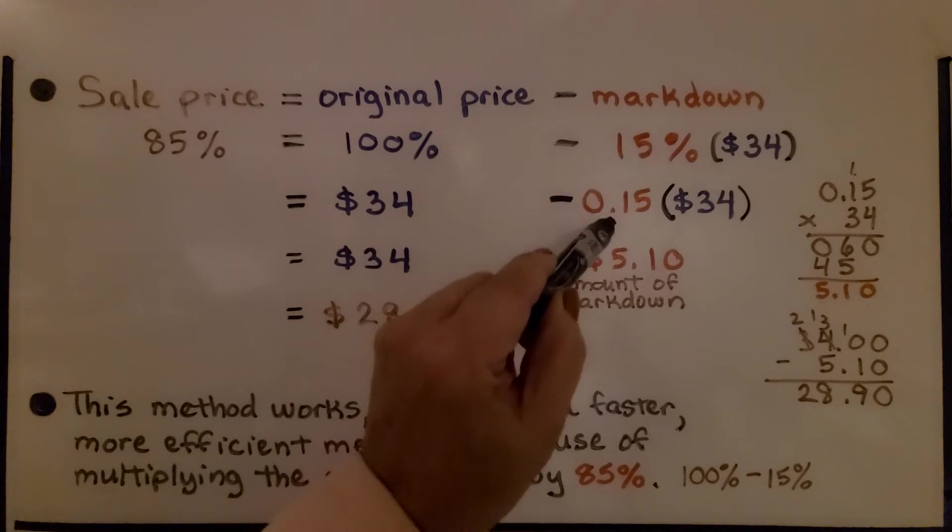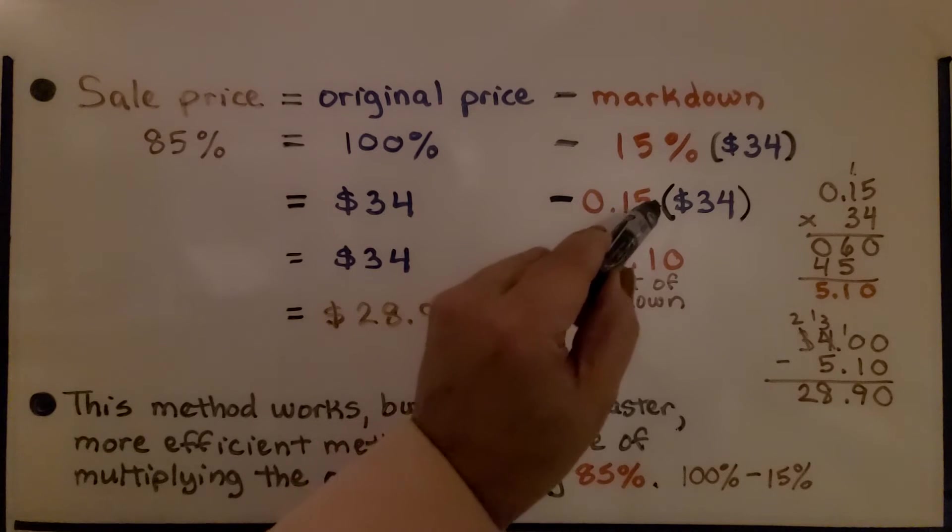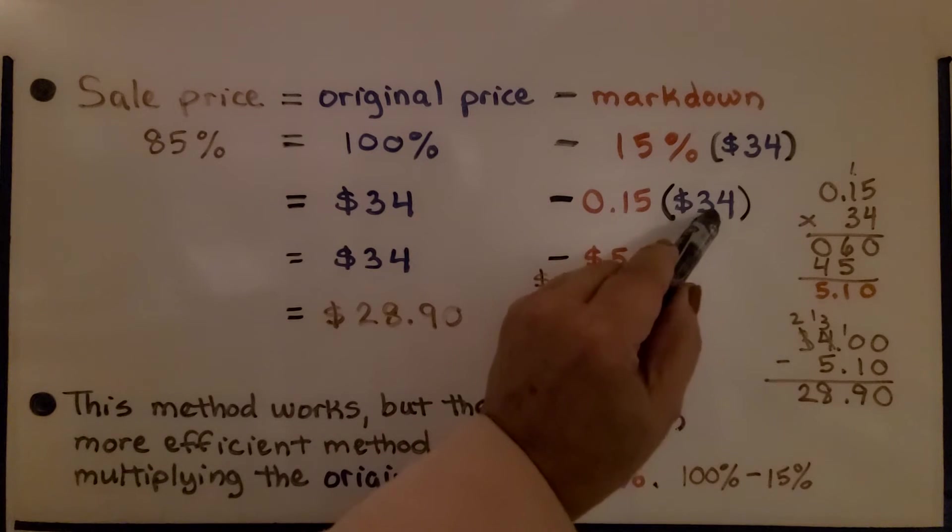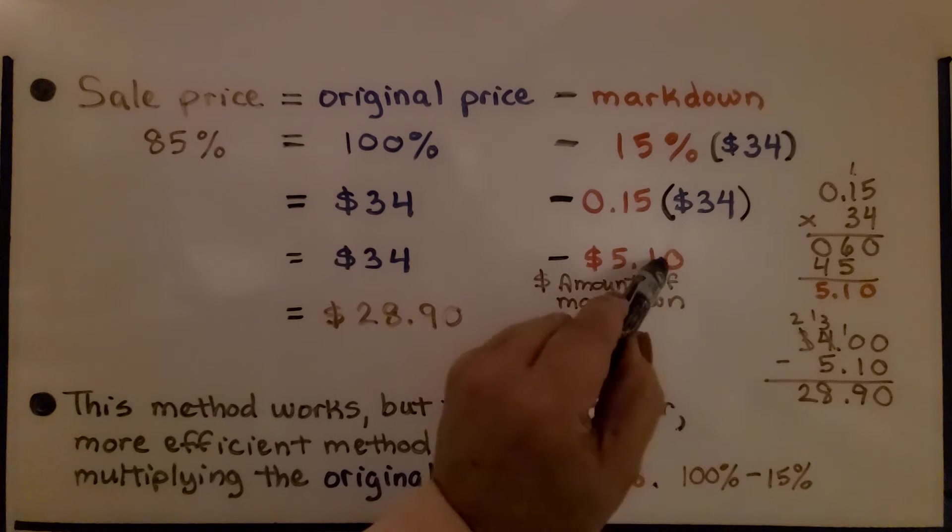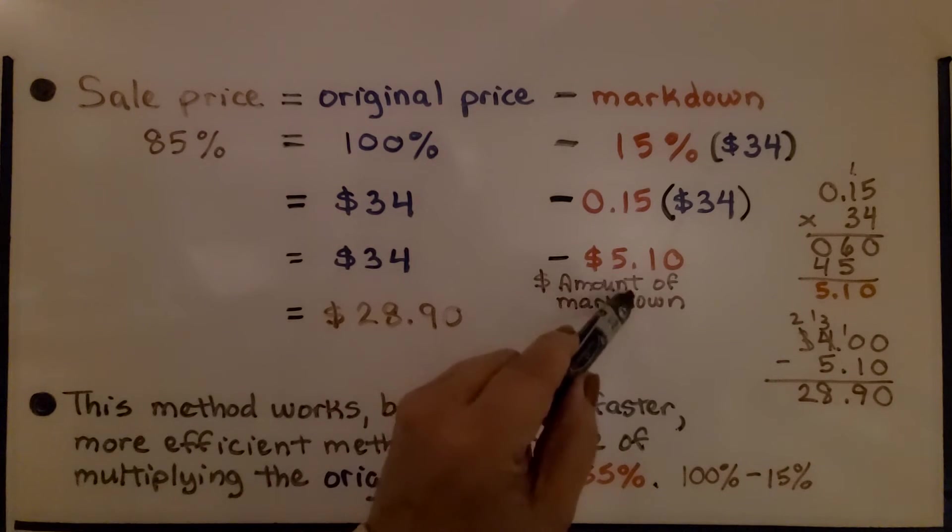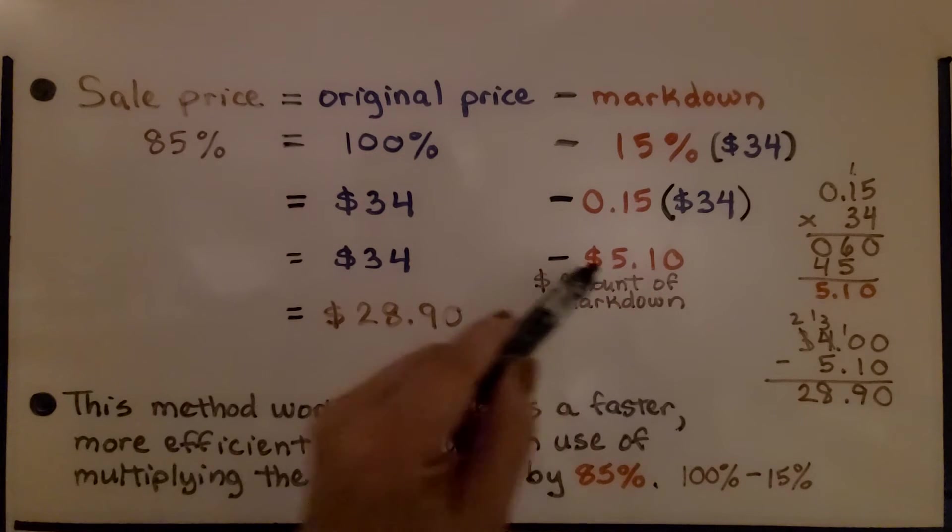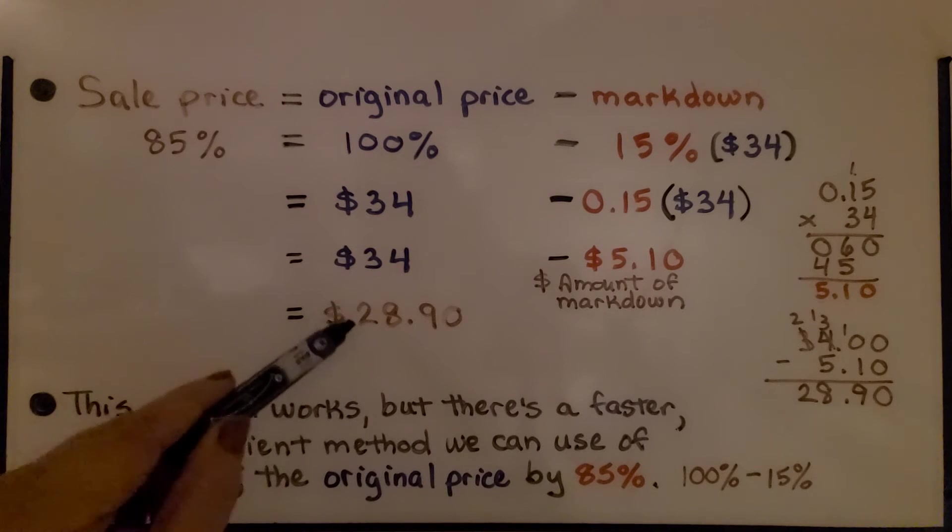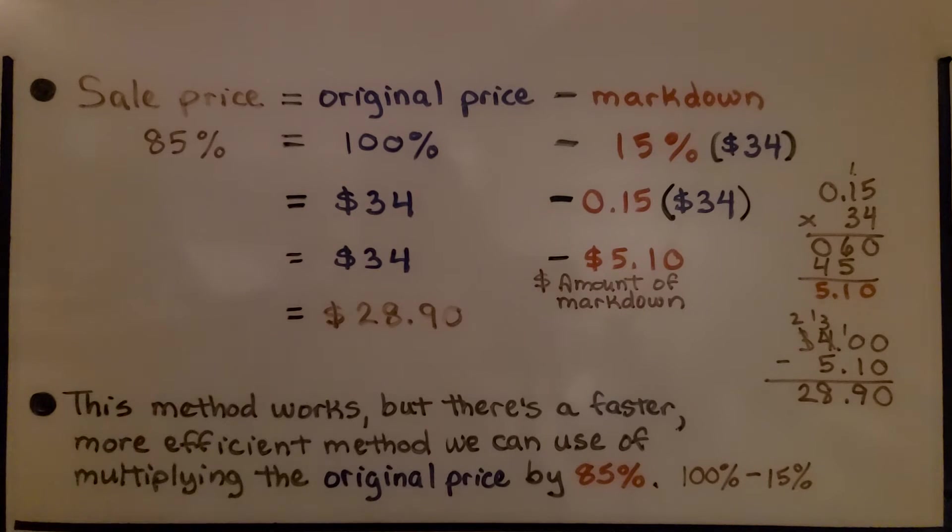We rewrite the 15% as a decimal as 0.15. We multiply it by $34. We get $5.10. So that's what we're going to take off of the $34. That's the dollar amount of the markdown. The sale price is going to be $28.90.